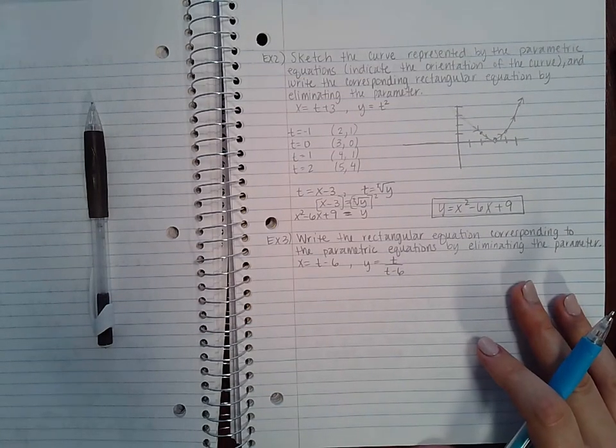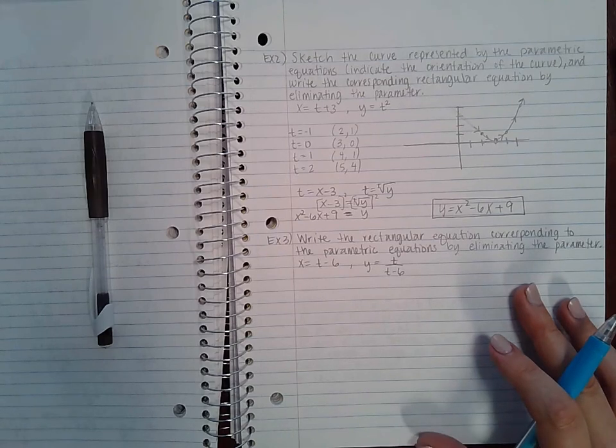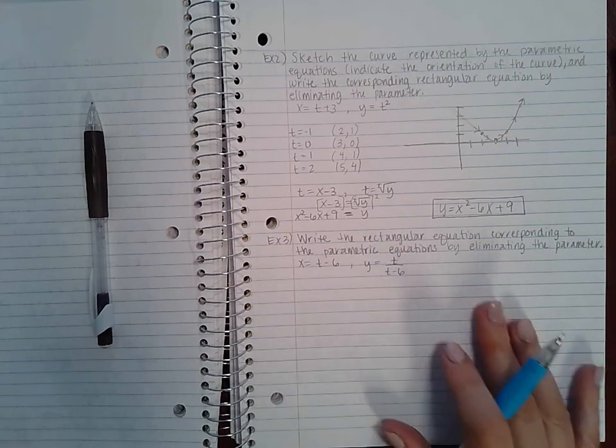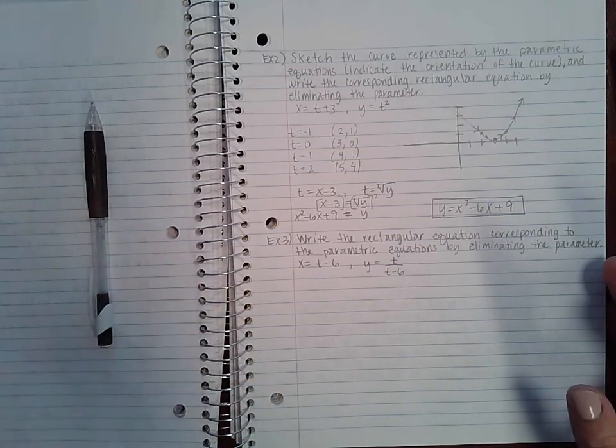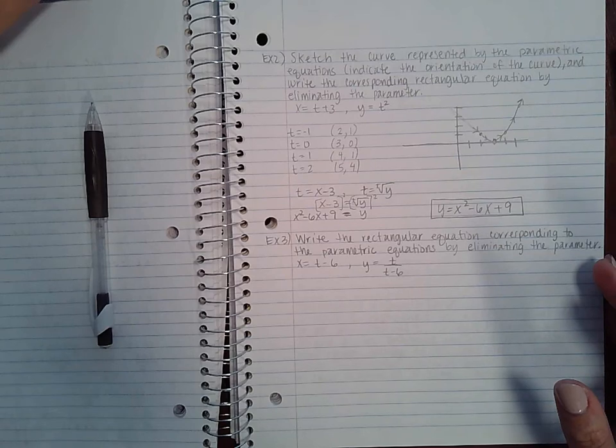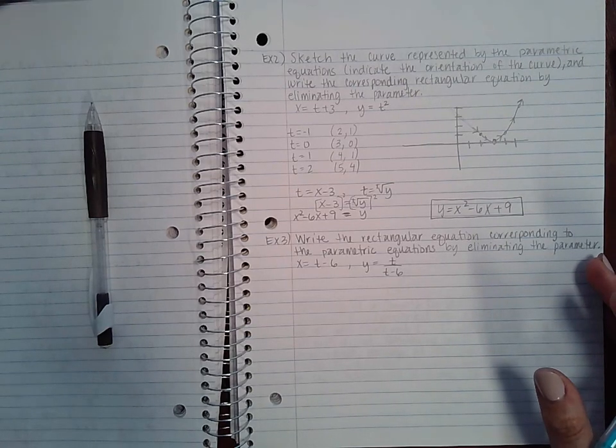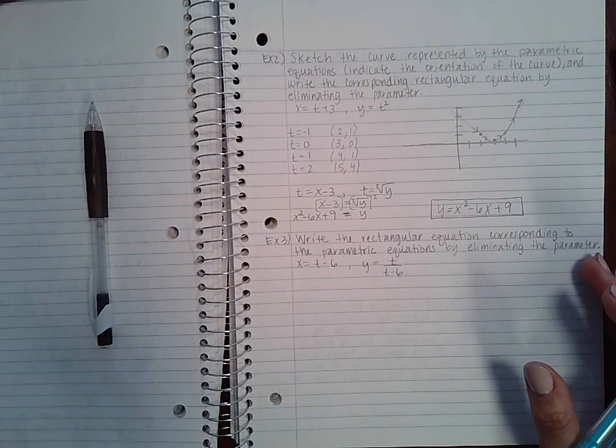So example 3 says, write the rectangular equation corresponding to the parametric equations by eliminating the parameter. So here they don't necessarily want us to graph it. They're not asking us to do that. They're just asking us to find the equation without the parameter.